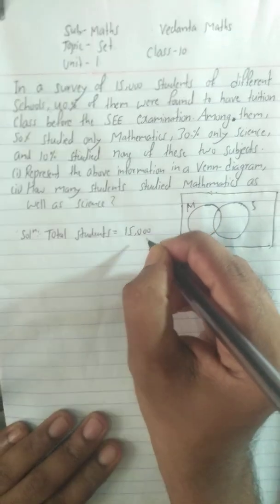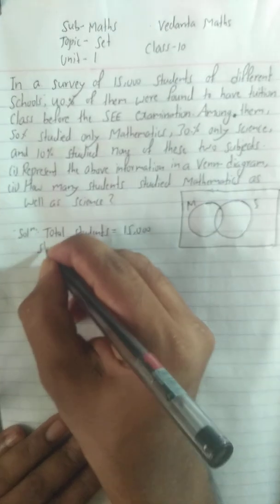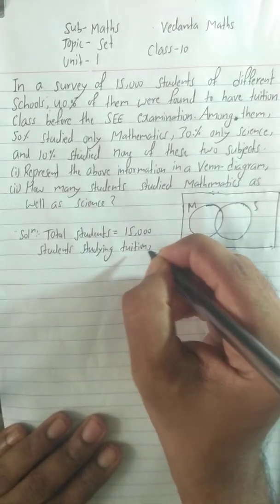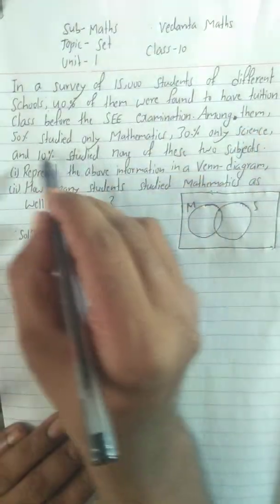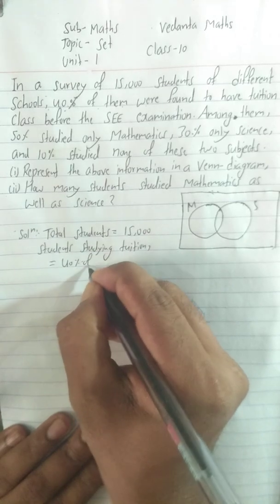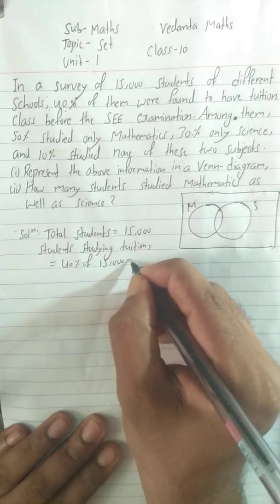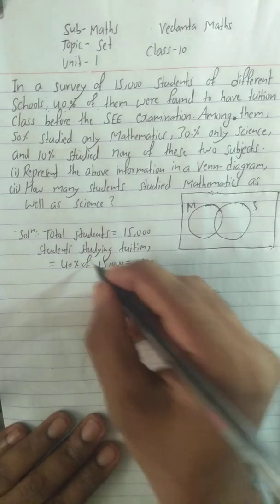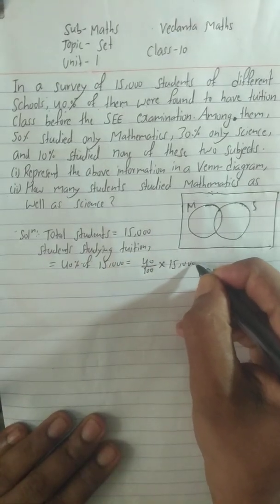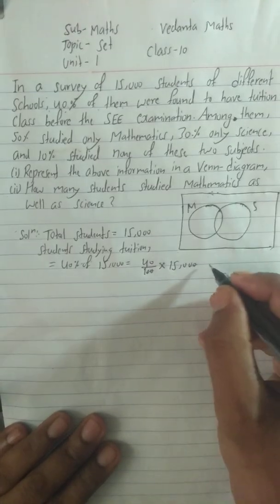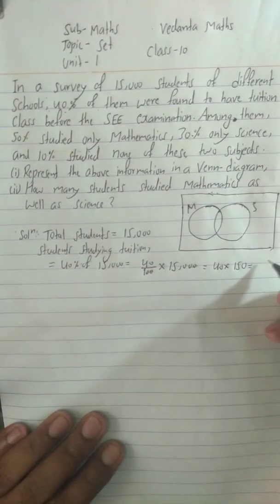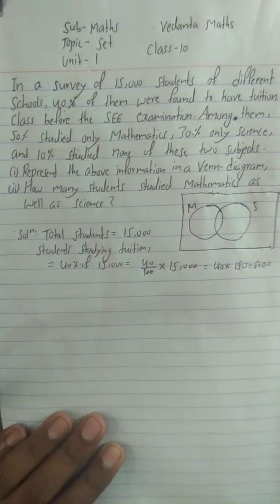Total students = 15,000. Students studying with tuition = 40% of 15,000. So we write 40 divided by 100, multiplied by 15,000. Cancelling the zeros: 40 × 150 = 6,000. So the number of students with tuition is 6,000.